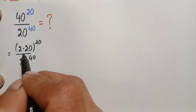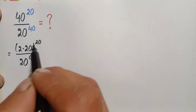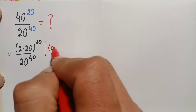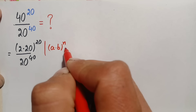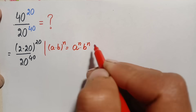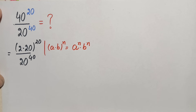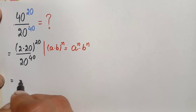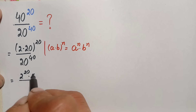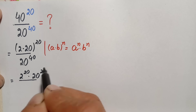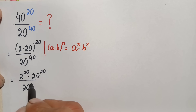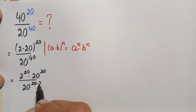In the numerator we will use the exponential identity: a times b raised to power n equals a raised to power n times b raised to power n. Using this identity, the numerator becomes 2 raised to power 20 times 20 raised to power 20, divided by 20 raised to power 40 — since 40 equals 20 times 2.